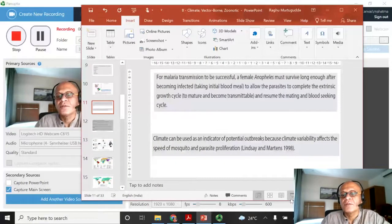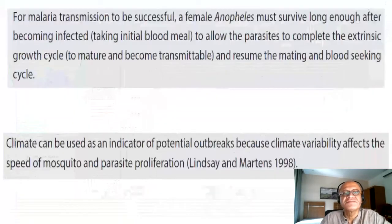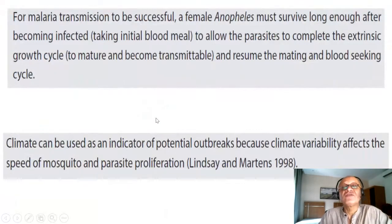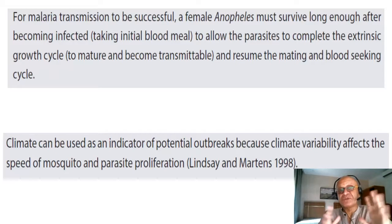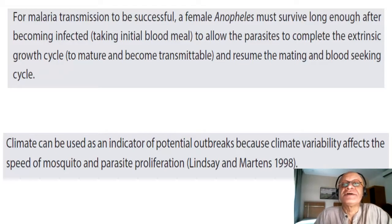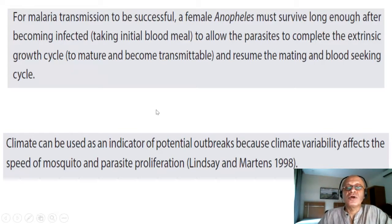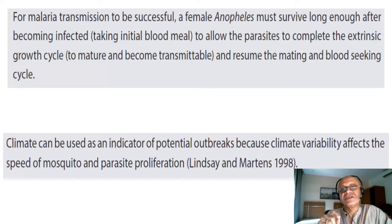Let's look at mosquitoes themselves and try to understand how difficult it will be to go from climate-related changes in parameters — environmental parameters like temperature, relative humidity, precipitation, and wind — and then see how bringing that to pathogens and disease outcomes will be really complicated.